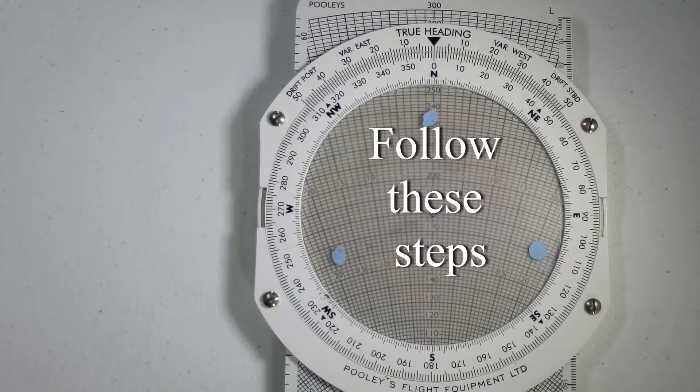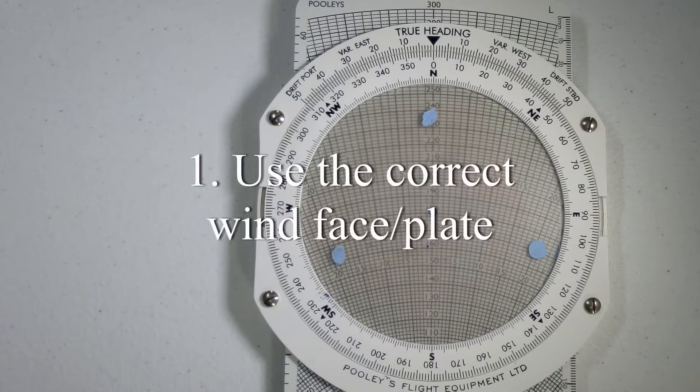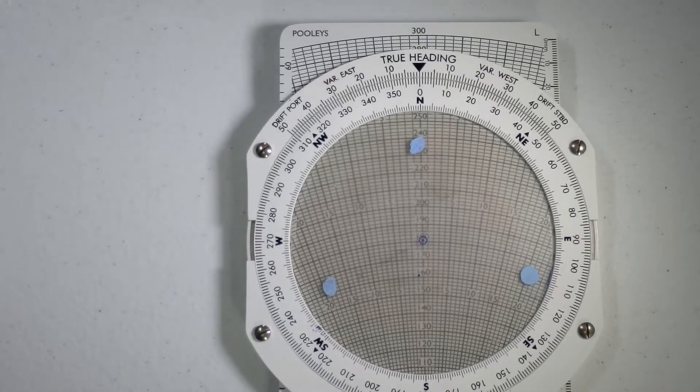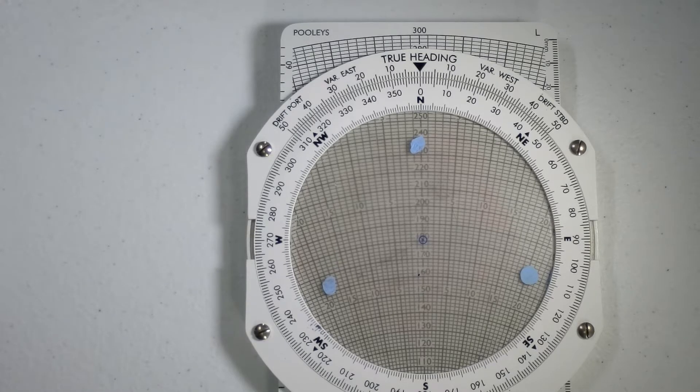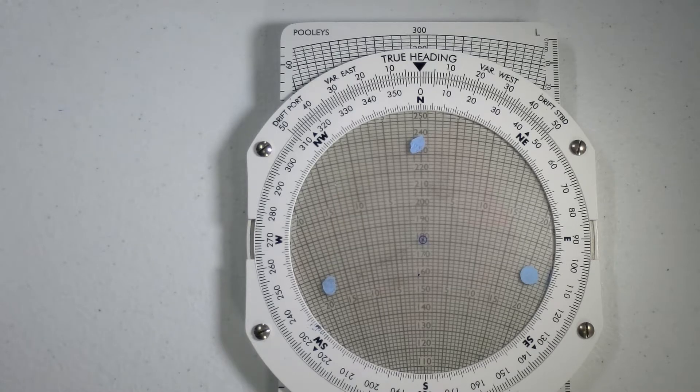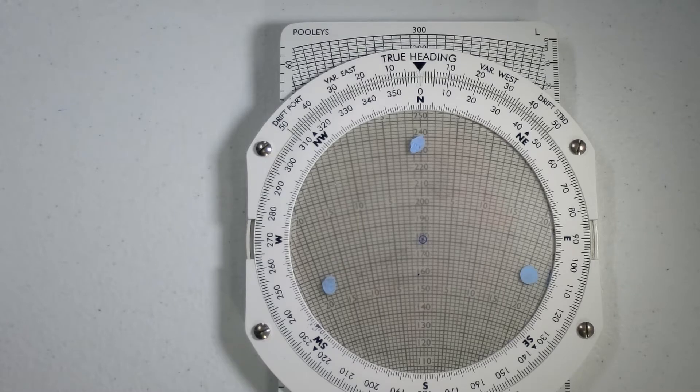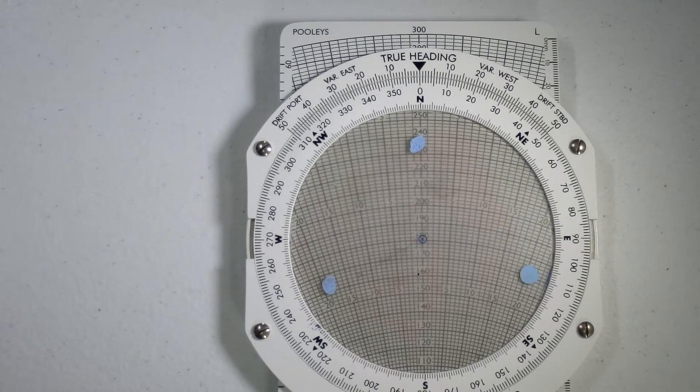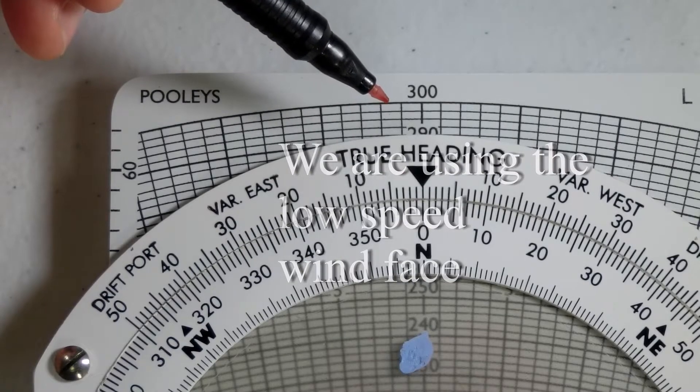There are a couple of steps that you can follow in order to get the right answer every time. First, before we start, we check that we have the correct wind scale or the correct wind plate installed in our CRP5. We know that this is the correct wind plate because given a true airspeed of 180 knots, the fastest we can ever go would be if we have a full tailwind of 40 knots. 180 plus 40 gives me 220 knots, so the maximum speed that this aircraft is going to cover over the ground is going to be 220. So we have brought the 300 knots maximum wind plate into our CRP5.